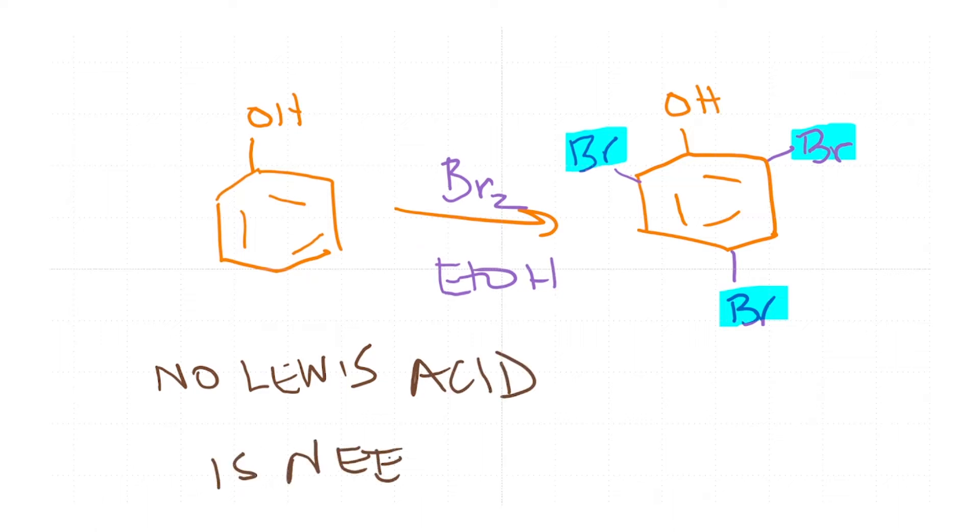This is interesting and important because that means that phenol is substantially more reactive when compared to benzene. You may recall that for bromination, we needed Br2 and aluminum chloride. How do we understand these two results? There is bromination happening only in three of the possible five positions with multiple brominations, and there is no Lewis acid needed. They both are related and we will discuss that now.